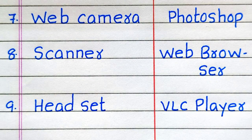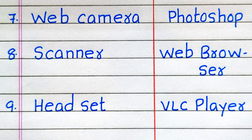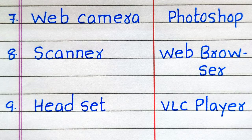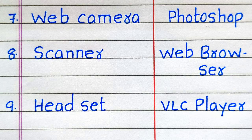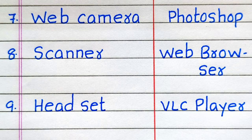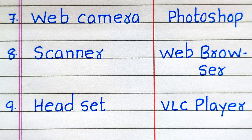Seventh example of hardware is web camera. Eighth is scanner. Ninth is headset. Seventh example of software is Photoshop. Eighth is web browser. Ninth is VLC Player.